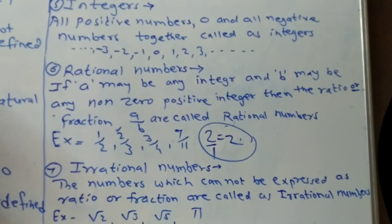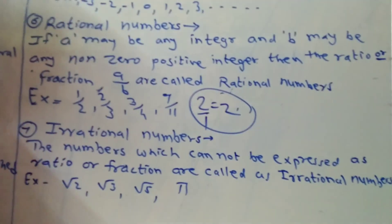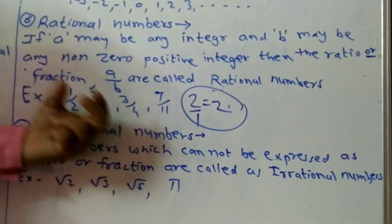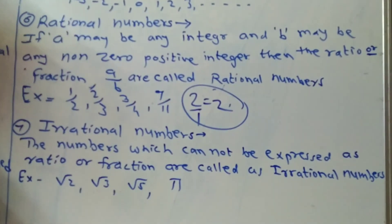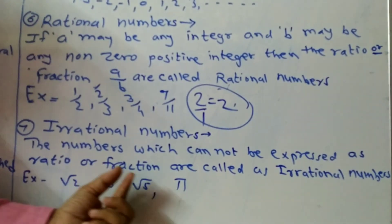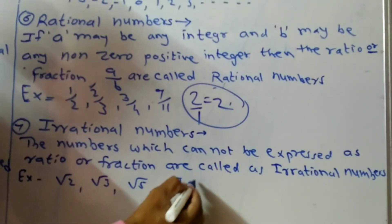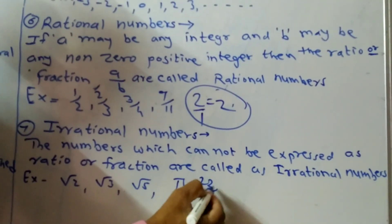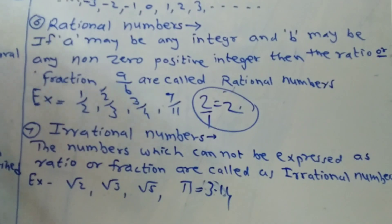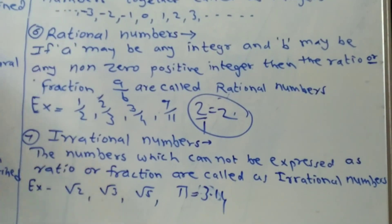Then irrational numbers — the numbers which cannot be expressed as a ratio or fraction are called irrational numbers. For example: root of 2, root of 3, root of 5, and pi. The value of pi is approximately 22 upon 7. These are called irrational numbers.